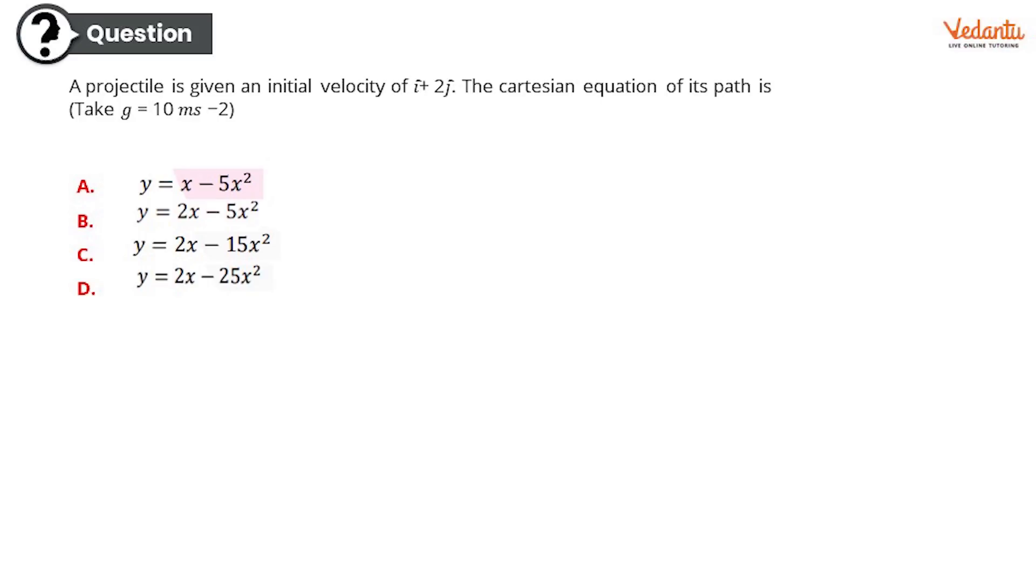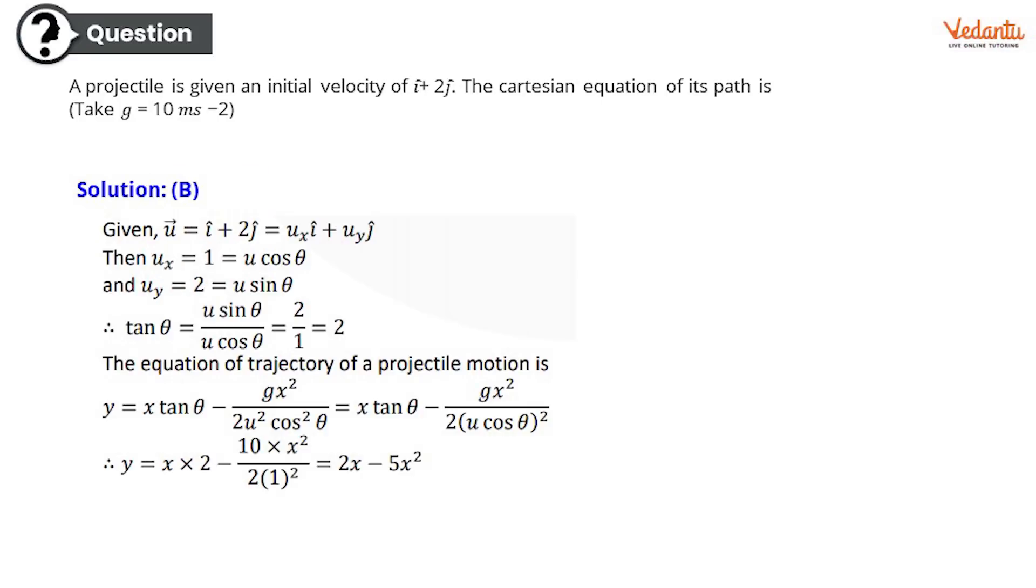Congratulations if you got that right, it's definitely option B: y = 2x - 5x². Good job.